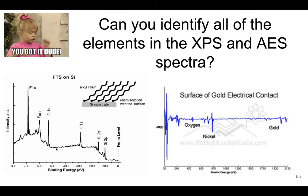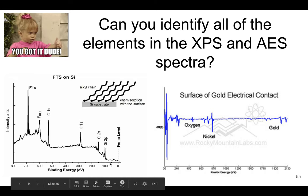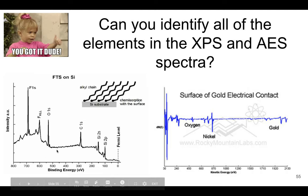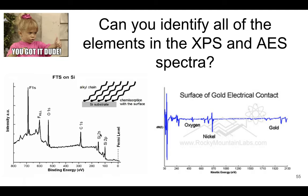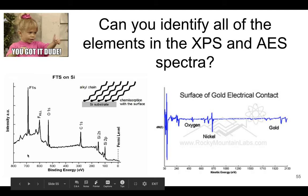This is just a matter of going through and looking at all the peak positions and finding out what we have. Keep in mind that if you have something like silicon and you locate the 2p, then you could also expect to see the 2s if it's within the range of binding energies.